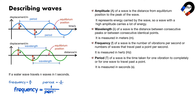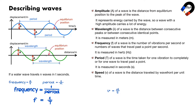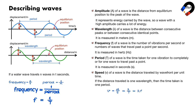Frequency is one divided by period. The speed v of a wave is the distance traveled by the wave front per unit time, measured in meters per second. If the distance traveled is one wavelength, then the time taken is one period. Since one over period equals frequency, then speed equals wavelength times frequency.